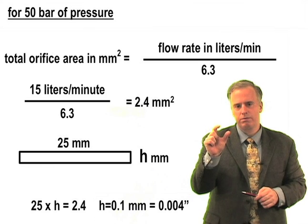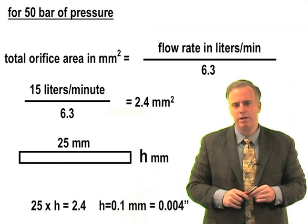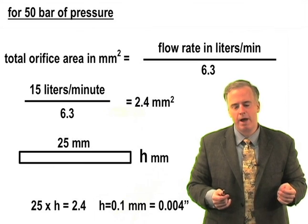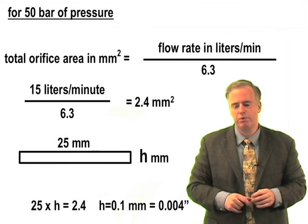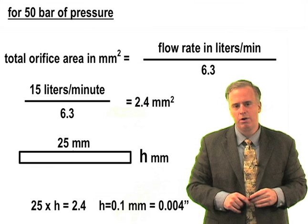Now let's say we've got an inch of wheel width, or 25 millimeters, so what height do we need to get that 2.4 square millimeters? You can do the math, 25 times the height is 2.4, and the calculation gives us a height of 0.1 millimeter, or 4 thou.